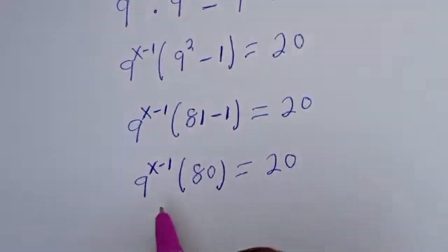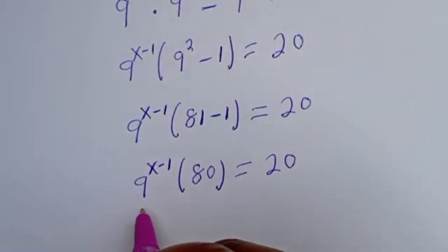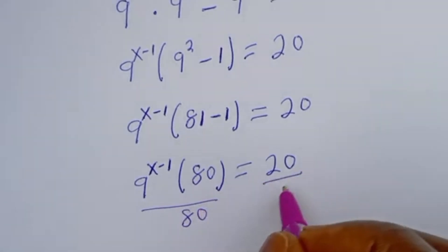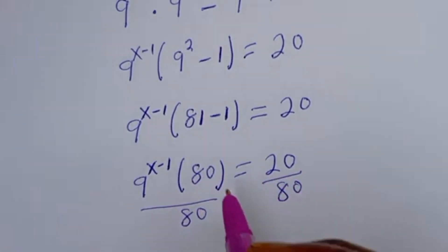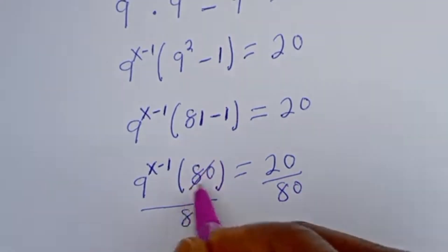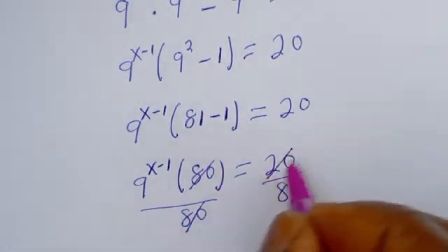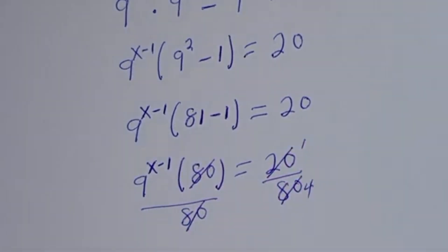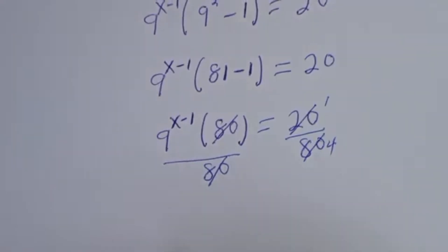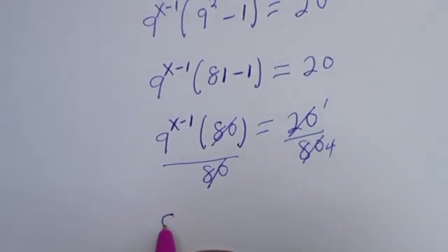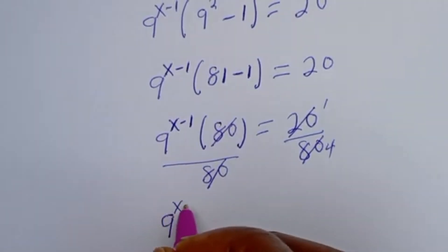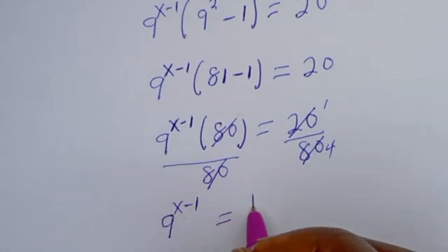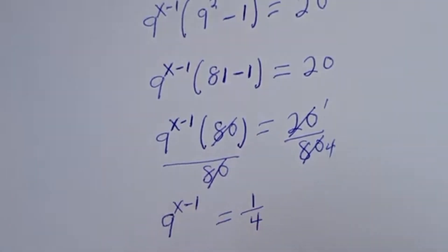Then let's divide both sides by 80. We have 9 to the power of x minus 1 is equal to 1 over 4.